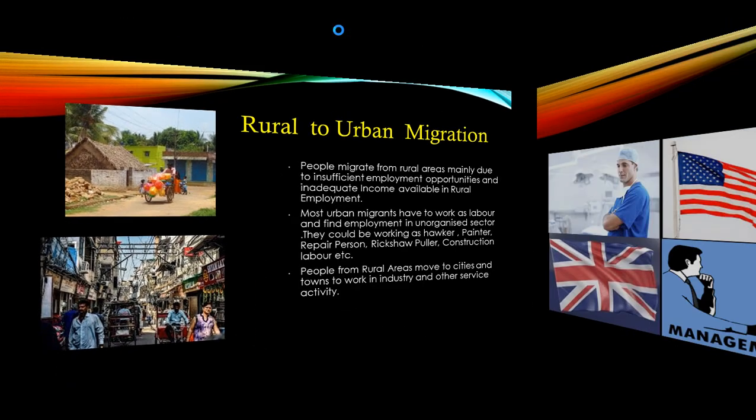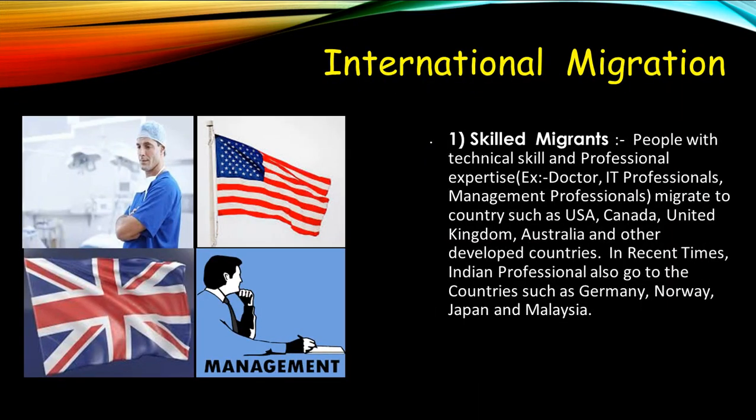International migration is when people move outside the boundary of their country — from one country to another. It is of two types: skilled migrants and unskilled migrants. Skilled migrants are people with technical skills or professional expertise — like doctors, IT professionals, and management professionals — who migrate to countries such as the USA, Canada, UK, Australia, and other developed countries. In recent times, Indian professionals also go to countries such as Germany, Norway, Japan, and Malaysia.